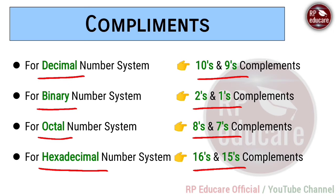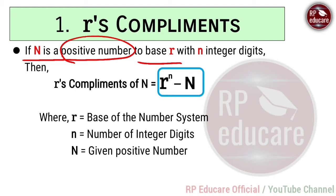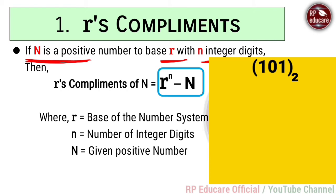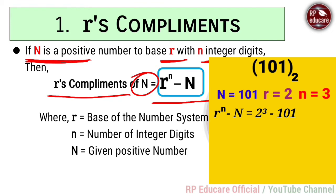Now, r's complement: if capital N is a positive number to the base small r with small n integer digits — for example, the number 101 in base 2 — then capital N = 101, small r = 2, and small n = 3 (three integer digits). The formula for r's complement is r to the power n minus capital N.